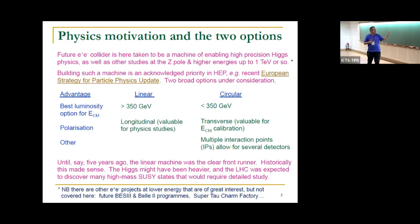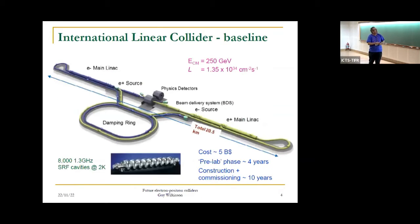Until about five years ago, the linear machine was clearly the front-runner. Historically that made sense - the Higgs could have been rather heavy, and the LHC was expected to discover many high-mass SUSY modes requiring detailed study. Unfortunately we know how that worked out. Let us talk about the front-running linear machine, the International Linear Collider. In its current incarnation: 250 GeV center of mass energy, luminosity of 10^34, length of 20 kilometers, relying on 8,000 superconducting cavities.